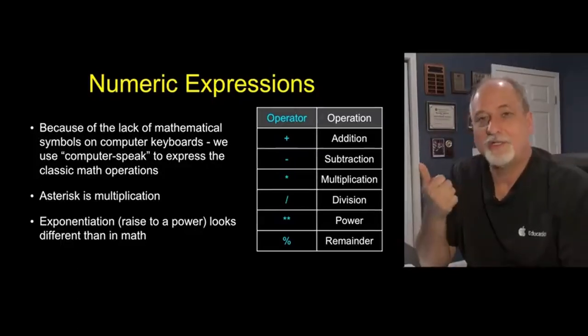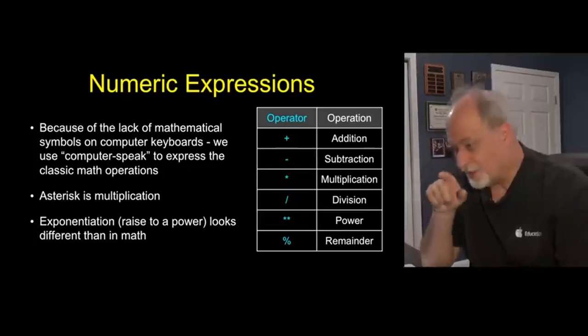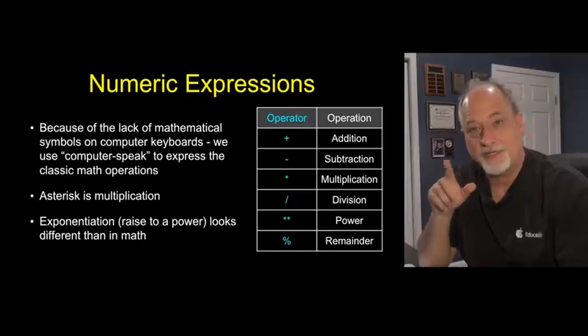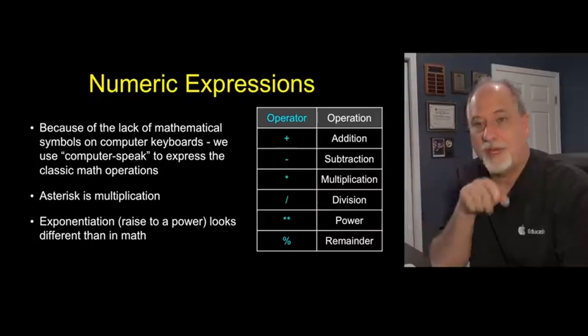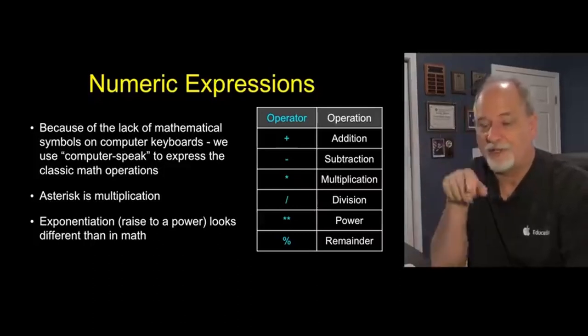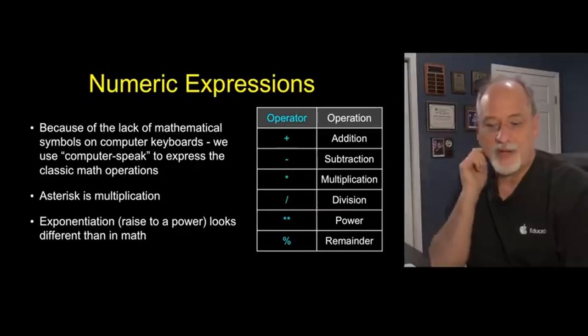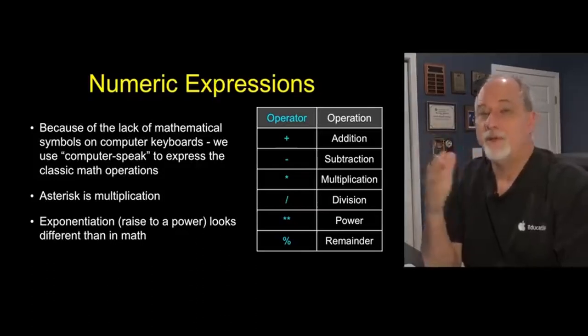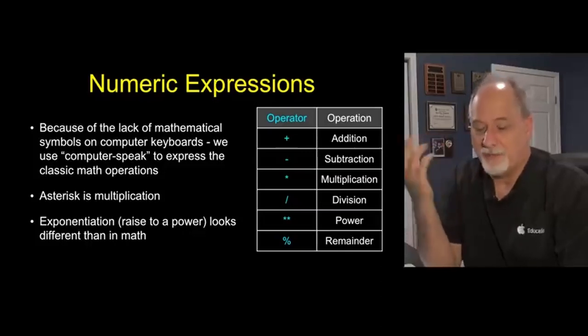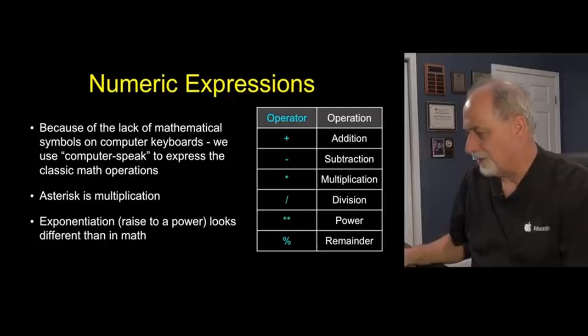The operators in computer programming are often very much the same as the mathematical operators. But we don't have all the fancy characters that we have in mathematics. We have to choose what's on the keyboard from the 1960s and 1970s. So plus is addition, minus is subtraction. We don't have a times sign or a dot in the middle, so we use the asterisk as multiplication. Division, we can't put two things over top of each other, so we use slash for division. Raising to the power is star star. And then remainder, also called the modulo operator, is the percent sign.